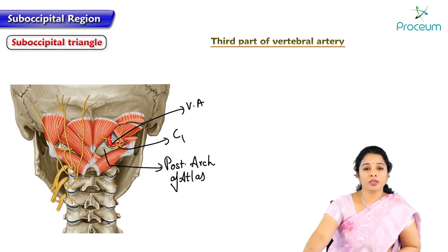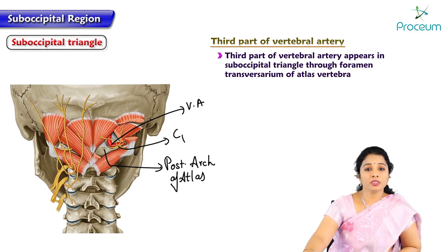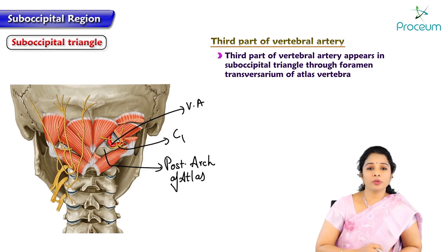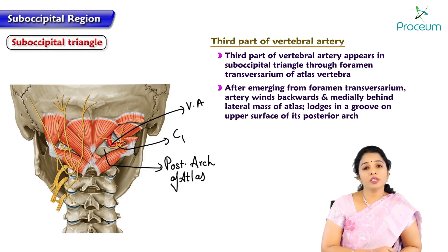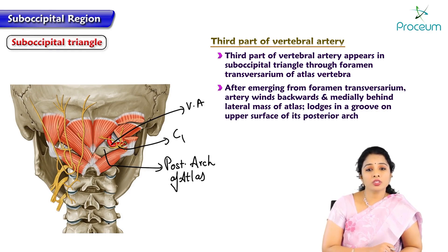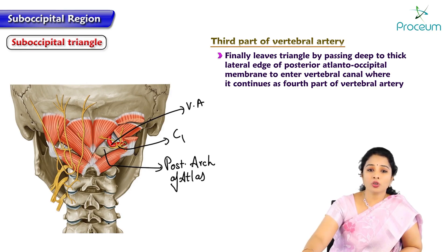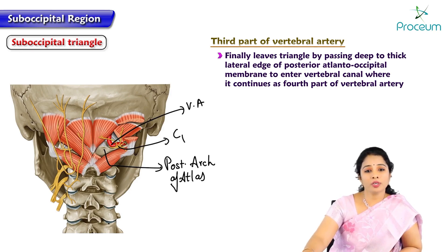Now let us discuss the third part of the vertebral artery. The third part of the vertebral artery appears in the suboccipital region through the foramen transversarium of the atlas vertebra. After emerging from the foramen transversarium, the artery winds backwards medially behind the lateral mass of atlas and lodges in a groove on the upper surface of the posterior arch of atlas. Finally it leaves the triangle by passing deep to the thick lateral edge of the posterior atlanto-occipital membrane to enter the vertebral canal, where it continues as the fourth part of the vertebral artery.